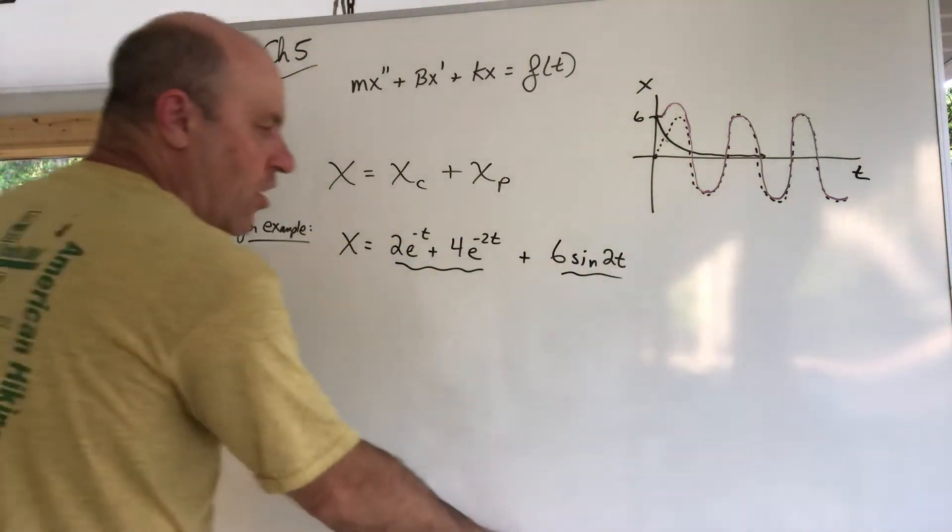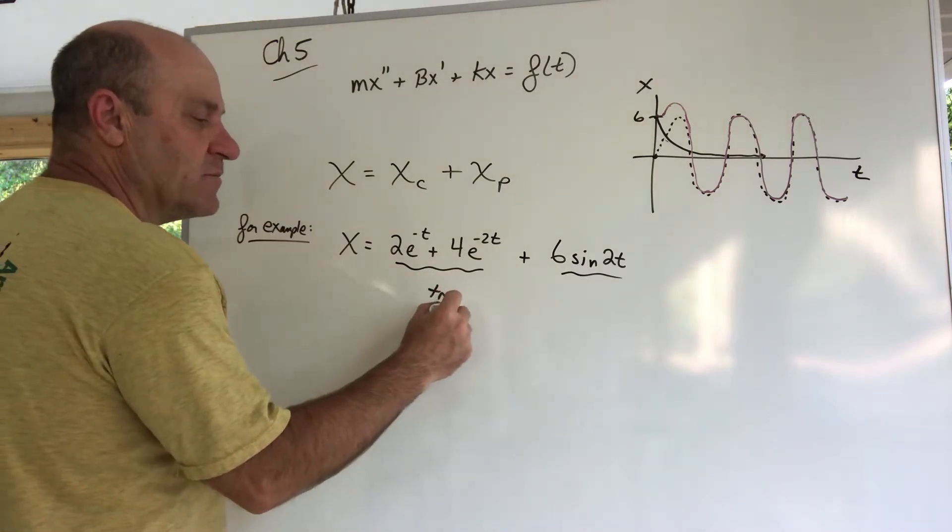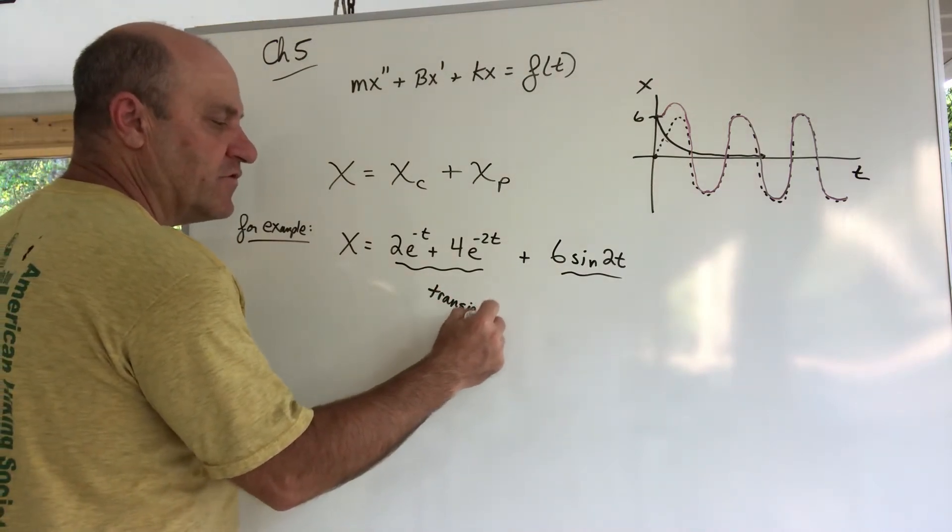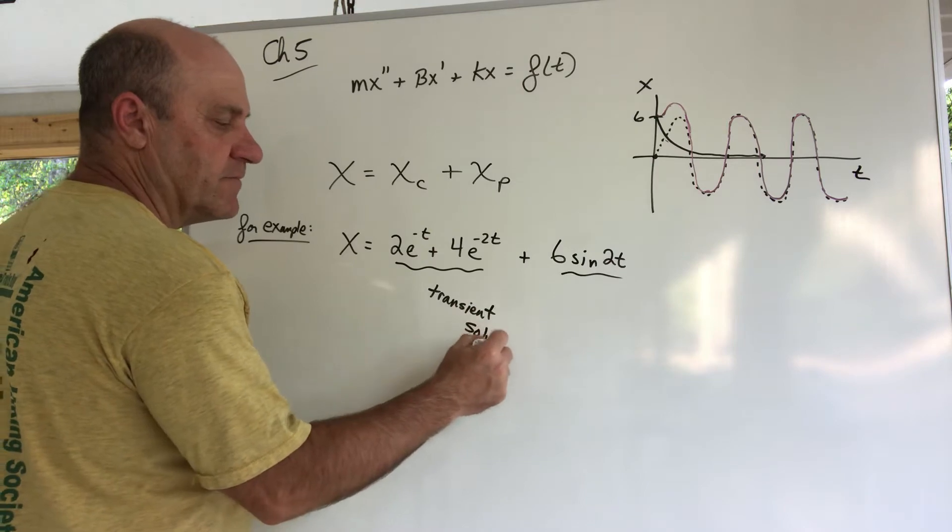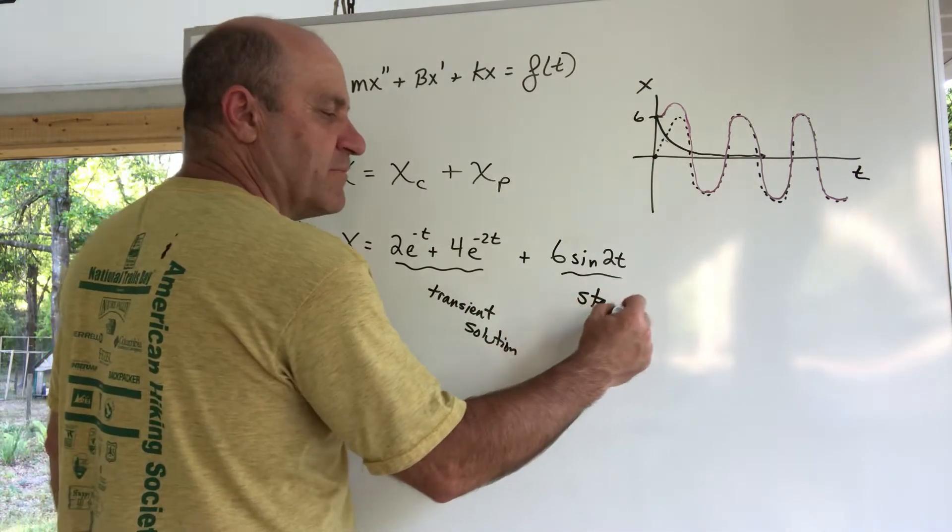The words we use for that are: we call this the transient part of the solution, the transient solution or part of the solution, and we call this the steady state part of the solution.